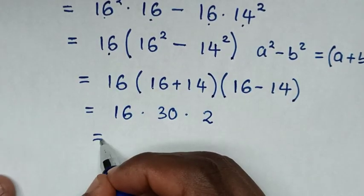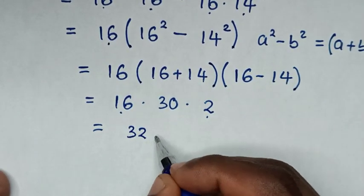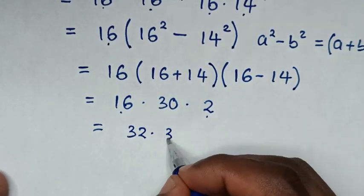Then in the next step, it will be equal to 16 times 2 is 32, then times 30.